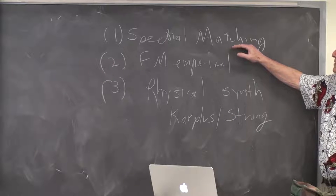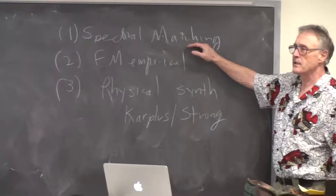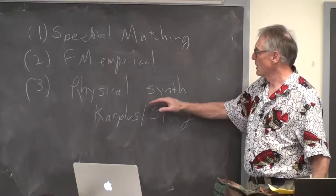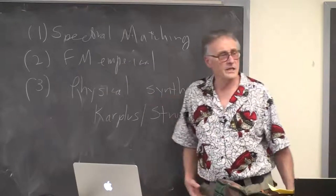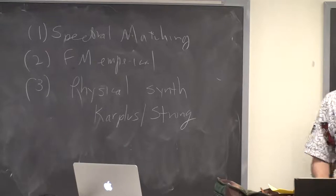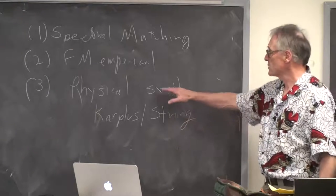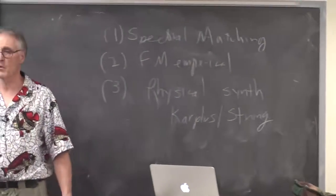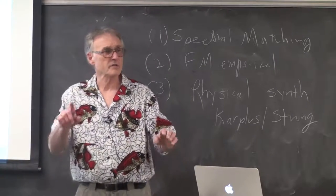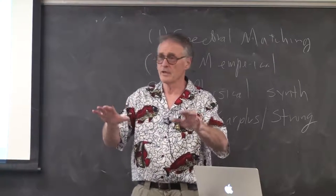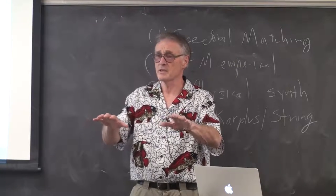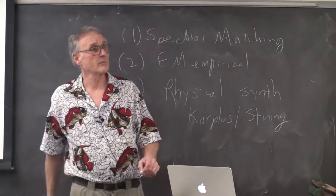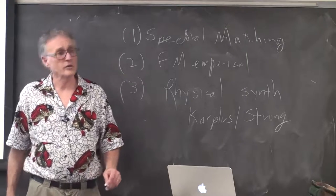Two FM voices on the PIC32 take something like 5% of the CPU. Two spectral matching voices each with five harmonics takes maybe 30% of the CPU. One string using Karplus-Strong takes maybe 2 or 3% of the CPU, so you can generate a lot of simultaneous string sounds. Last year we had people try to do piano synthesizers requiring three struck strings per note with ten notes, so 30 strings they could add together — and that ran in real time at 10 kilohertz.